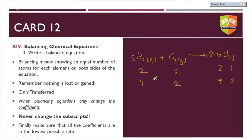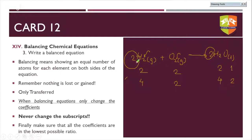Some important points: balancing a chemical equation means only balancing the coefficients — never touch the subscript. Changing the subscript changes the chemical formula of the molecule, making it a different molecule. Second, all coefficients should be in the lowest possible ratio. For example, 4H₂ + 2O₂ → 4H₂O is balanced but not in the lowest ratio — always write them in the lowest possible ratio.